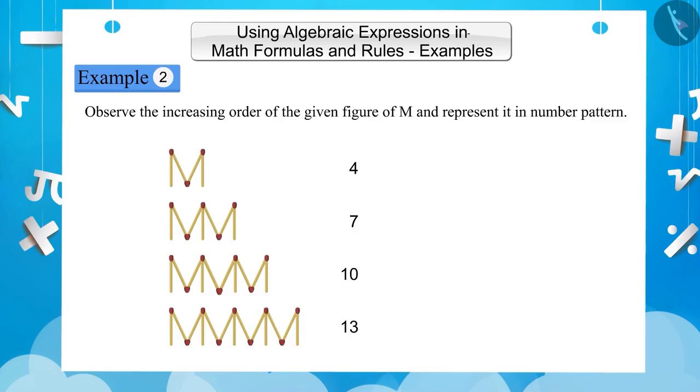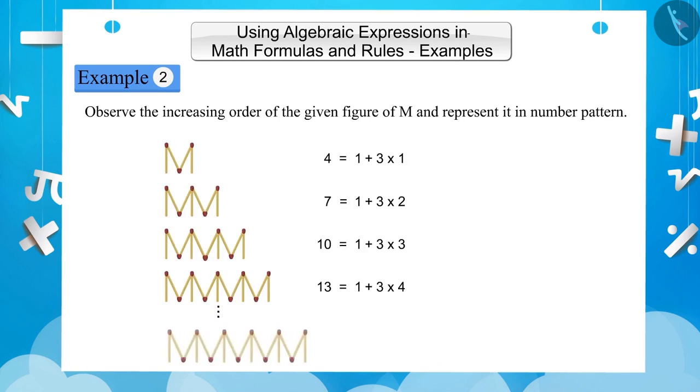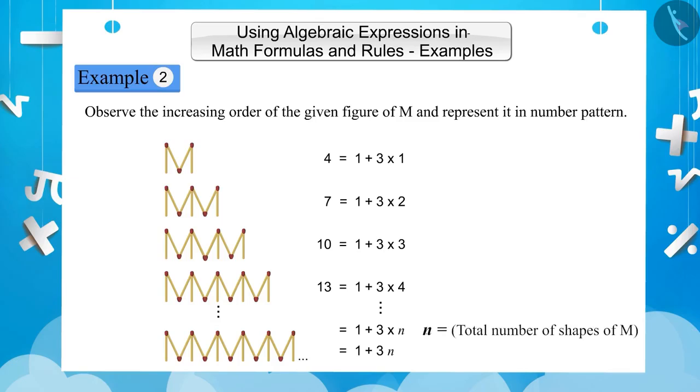We can also show them as follows: 4 equals 1 plus 3 times 1, 7 equals 1 plus 3 times 2, 10 equals 1 plus 3 times 3, 13 equals 1 plus 3 times 4. A similar expression for the case of n would be 1 plus 3 times n equals 1 plus 3n. Here, n represents the total number of shapes of M.